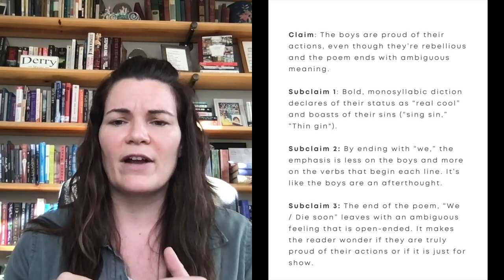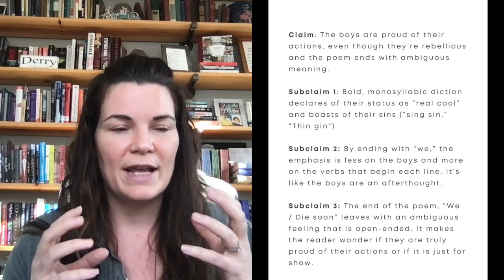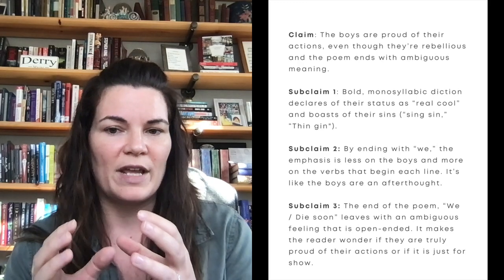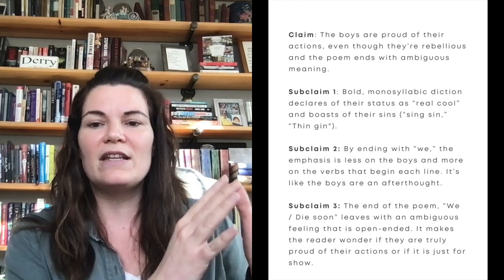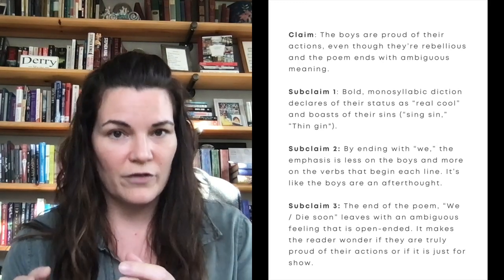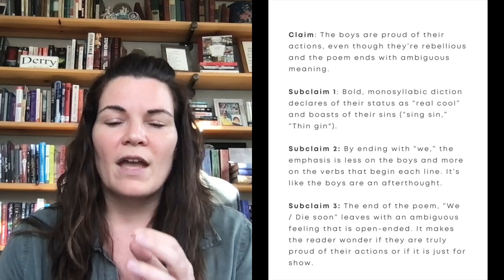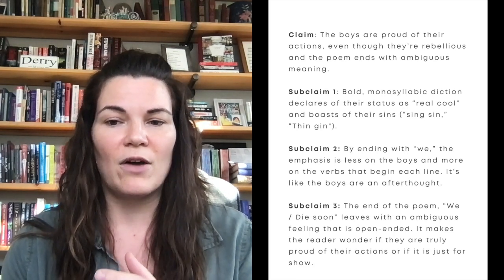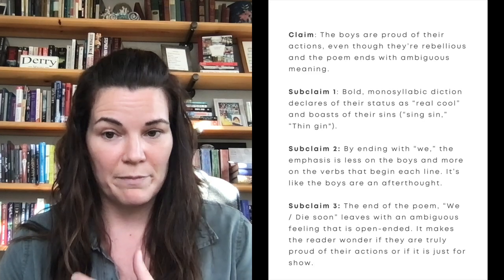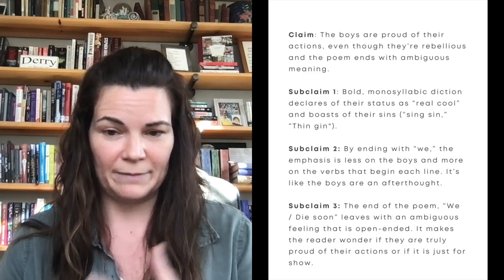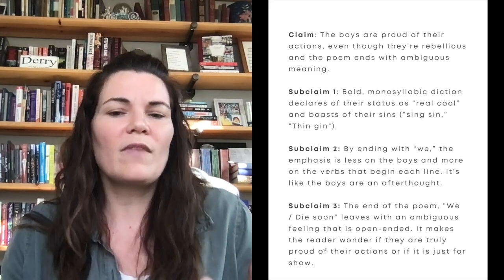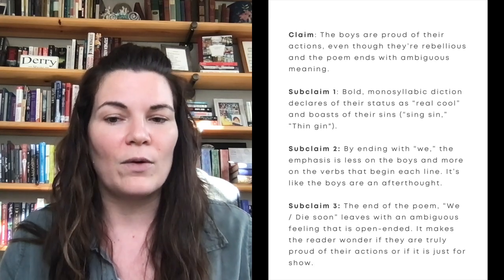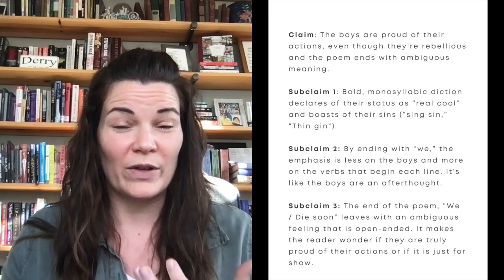In the second paragraph, I wanted to talk about how it ended with 'we,' and that the emphasis is less on the 'we' because it's at the end of the line, and more on the strong verbs at the beginning of each line. In the last paragraph, I would talk about how 'we die soon' gives an ambiguous ending to the poem, and makes us wonder if the boys are actually proud and think they're real cool.